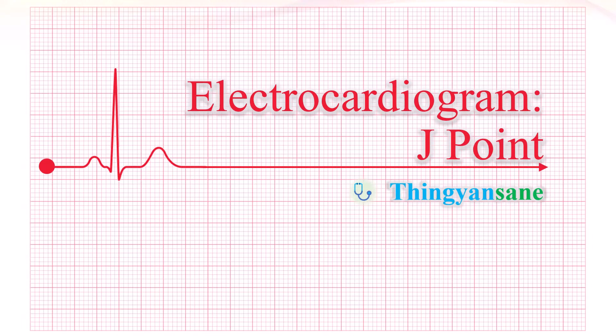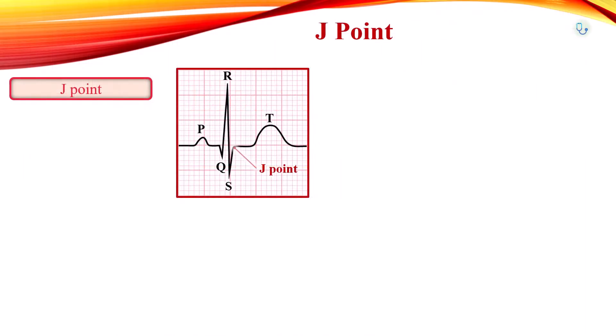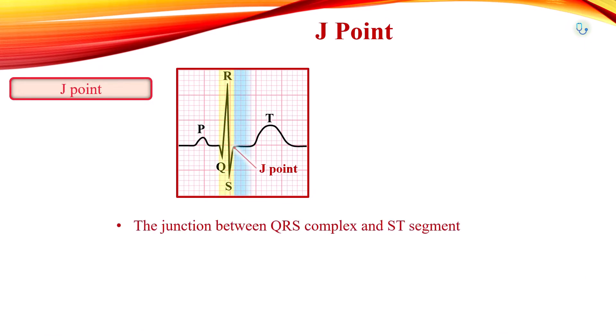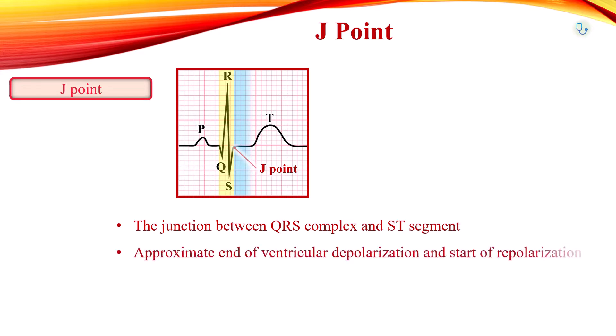The J-point in EKG is the point where the QRS complex joins the ST segment. The J-point represents the approximate end of ventricular depolarization and the beginning of repolarization.